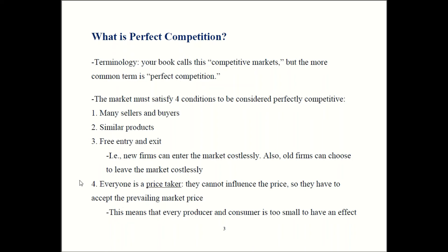The fourth and final condition in order to be perfectly competitive is that everyone is a price taker. We talked about this a little bit in chapter three. As a quick refresher: by a price taker we mean that each individual firm and each individual customer is just too small on their own to have any influence over price. As a result, everyone — both consumers and producers — has to just accept the prevailing market price.